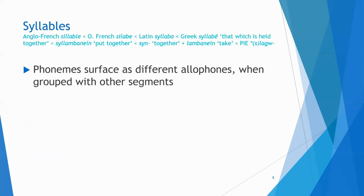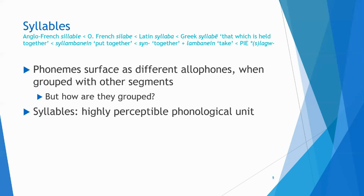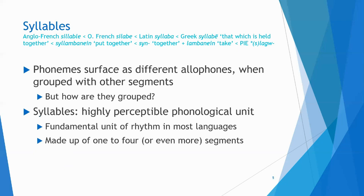So, syllables. We've talked about phones and phonemes, but they don't often appear on their own individually — they appear in groups, and indeed there is a level of analysis where we group them. When these phonemes surface as allophones and these allophones group together, this is the syllable. The syllable, as you might be familiar with it, is a highly perceptible phonological unit and a fundamental unit of rhythm in English and many other languages. Syllables are made up of one to four, possibly even more, segments grouped together into a pronounceable unit.